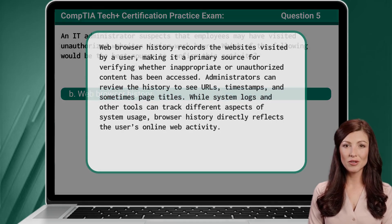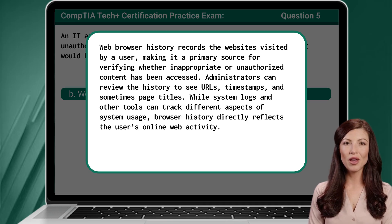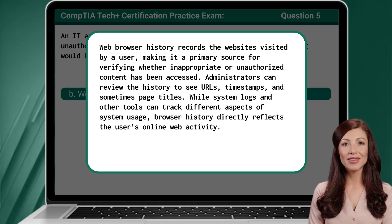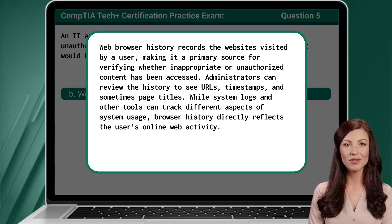Web browser history records the websites visited by a user, making it a primary source for verifying whether inappropriate or unauthorized content has been accessed. Administrators can review the history to see URLs, timestamps, and sometimes page titles. While system logs and other tools can track different aspects of system activity, browser history directly reflects the user's online web activity.